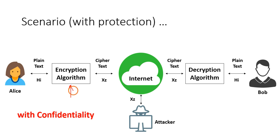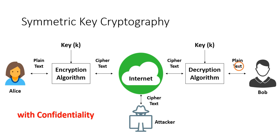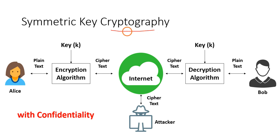This process is called encryption — converting plain text to cipher text. Similarly, decryption is the process of converting cipher text back to plain text. The subject that deals with encryption and decryption algorithms is called cryptography.